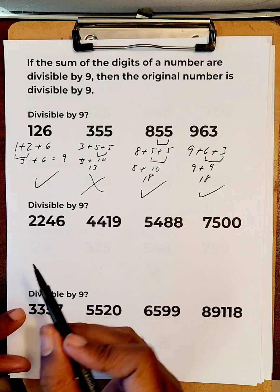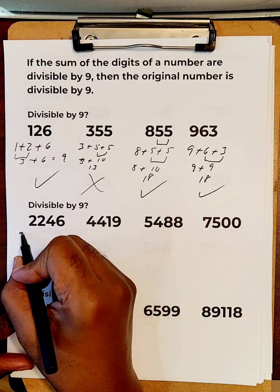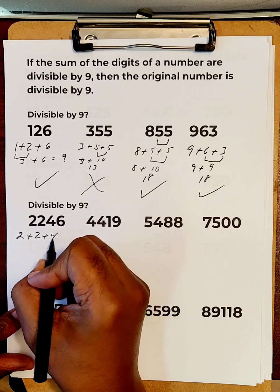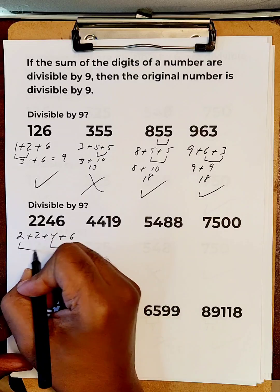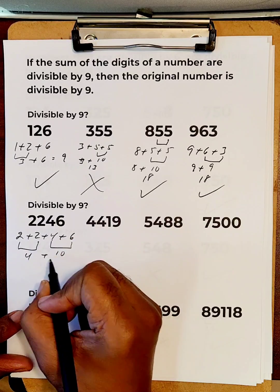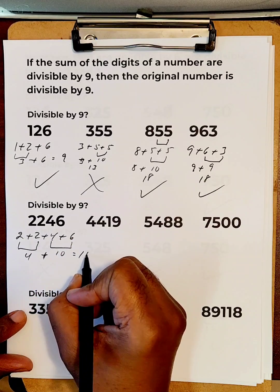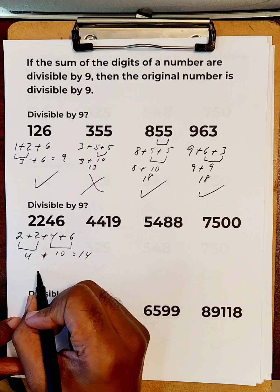Let's try this. 2 plus 2 plus 4 plus 6. Well, this is already 10. This is 4. If we add those together, we get 14. And 14 is not.